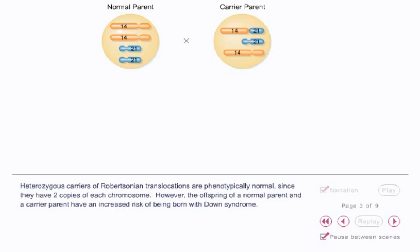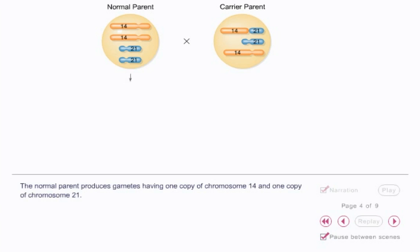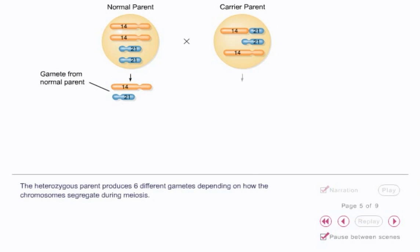However, the offspring of a normal parent and a carrier parent have an increased risk of being born with Down syndrome. The normal parent produces gametes having one copy of chromosome 14 and one copy of chromosome 21. The heterozygous parent produces six different gametes depending on how the chromosomes segregate during meiosis.